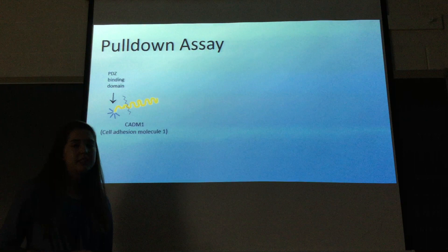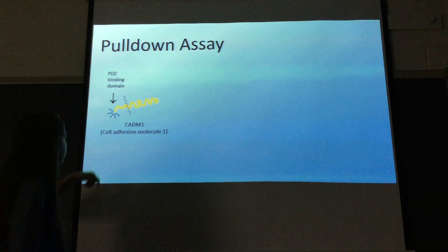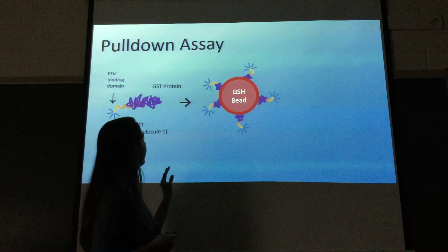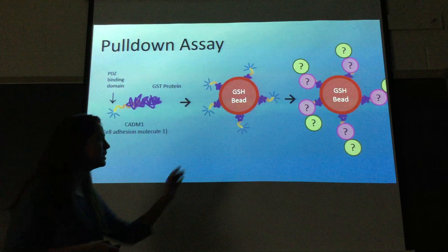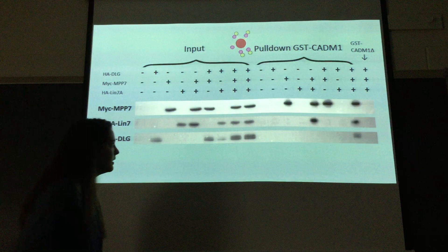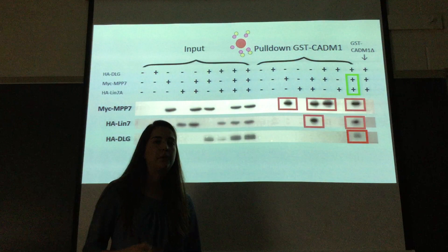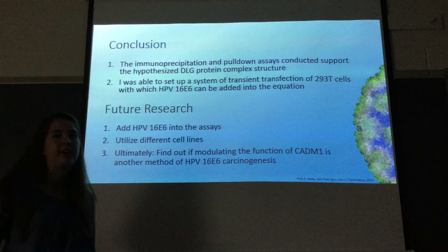The second type of test was a pull down assay, which is similar to immunoprecipitation except the hook is a specific genomic sequence on your protein of interest — in this case the PDZ binding domain of CATM1. You cut that off, attach it to a GST protein which has high affinity for a GSH bead, precipitate those beads out, and determine what was binding that portion of CATM1. Our results were again consistent with our hypothesis: MPP7 bound CATM1, LIN7 bound MPP7, and DLG bound only when both LIN7 and MPP7 were present.